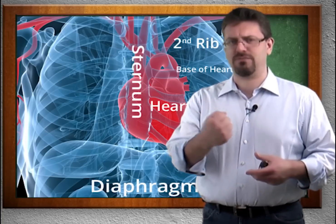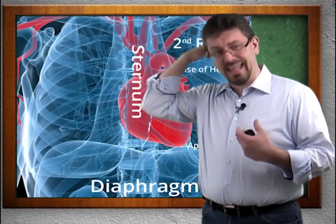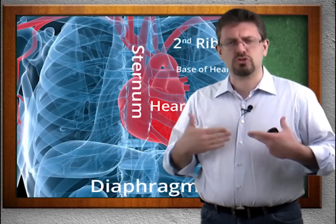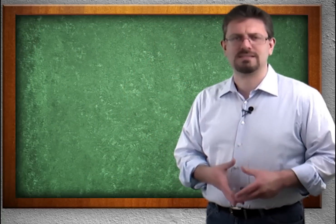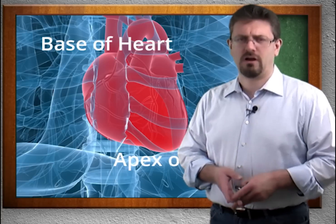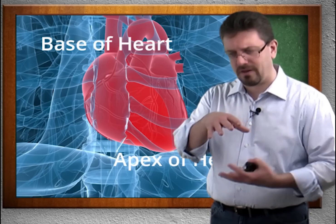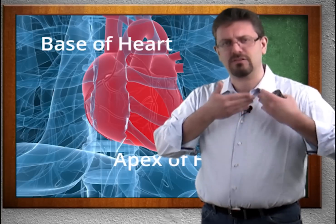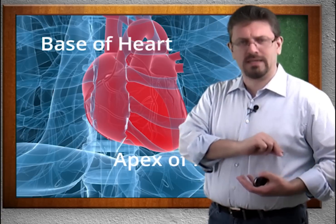To review the location: it's about the size of your fist, a little to the left of the midline, behind the sternum, anterior to the vertebral column, medial to the lungs, and sits on top of the diaphragm. The heart has four notable surface features: the base, the apex, and three surfaces. The base of the heart is located superiorly — at the top — forming the flatter area, found beneath the second rib. The base is formed mostly by the left and right atria.